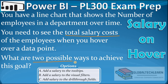Let's look at the options. Option A is add salary to tooltip. Tooltip is used for presenting additional information on mouse hover over, so this option we can try. Option B is add salary to visual filters. We use filters on a visual when we want to filter data from the visual — this is not related to presenting additional information on hover over, so this option we can ignore.